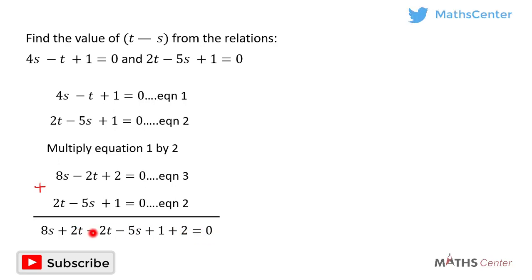2t minus 2t will give us zero. And so we will have 8x minus 5x, which is 3x, plus 1 plus 2, which will give us 3. So 3x plus 3 equals zero.